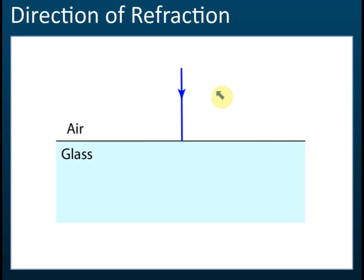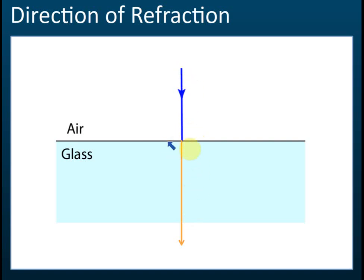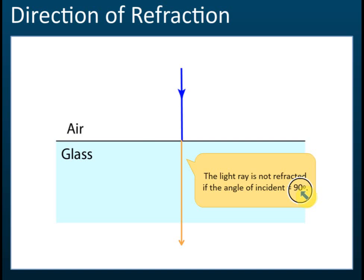If the light ray is at right angles to the plane of refraction — the same direction as the normal — the direction will not change and the light ray is not refracted. This is the case where the incident ray is at right angles to the plane: the light ray is not refracted and will just move forward in a straight line. The light ray is not refracted if the angle of incidence is 0 degrees.